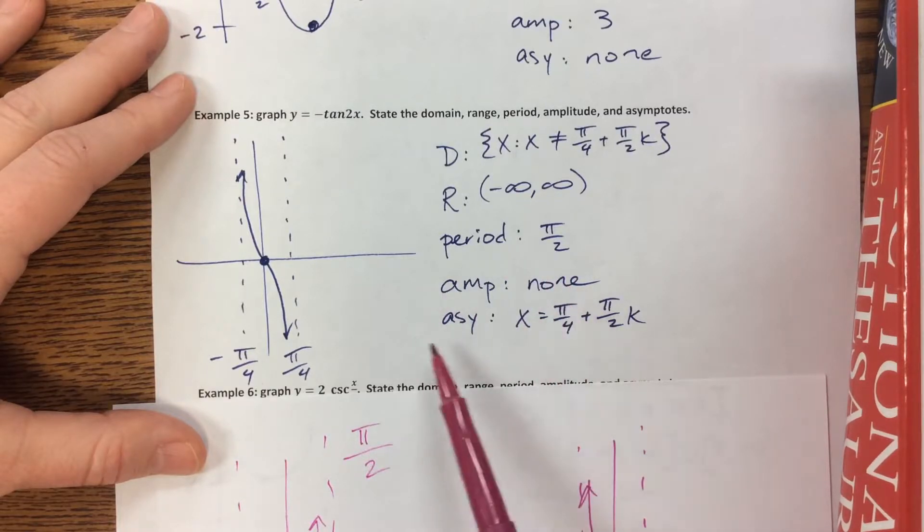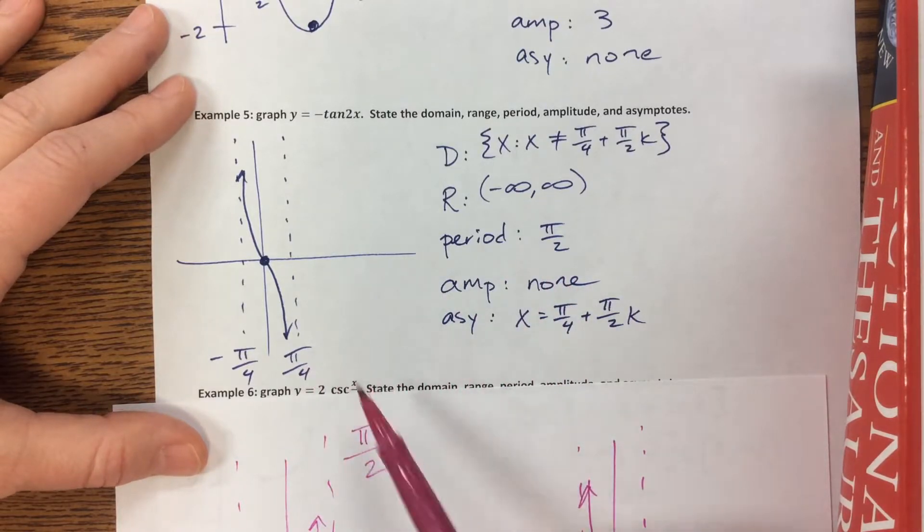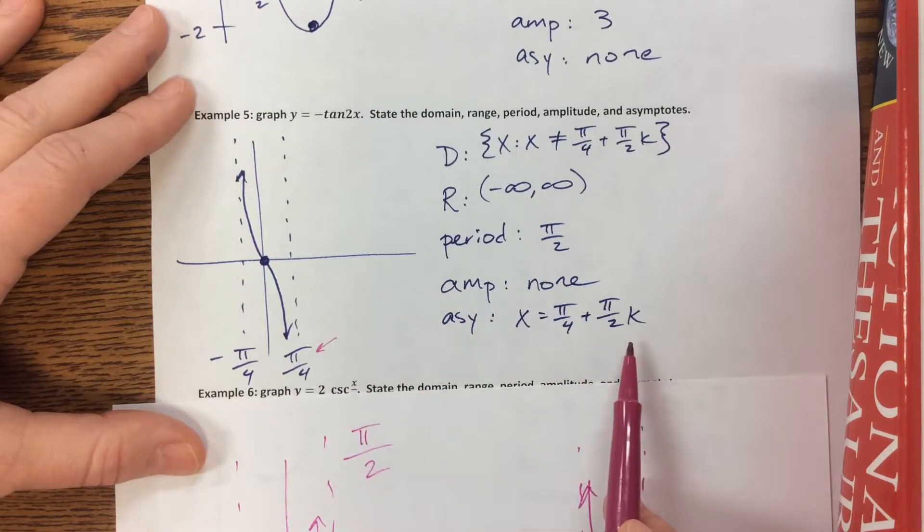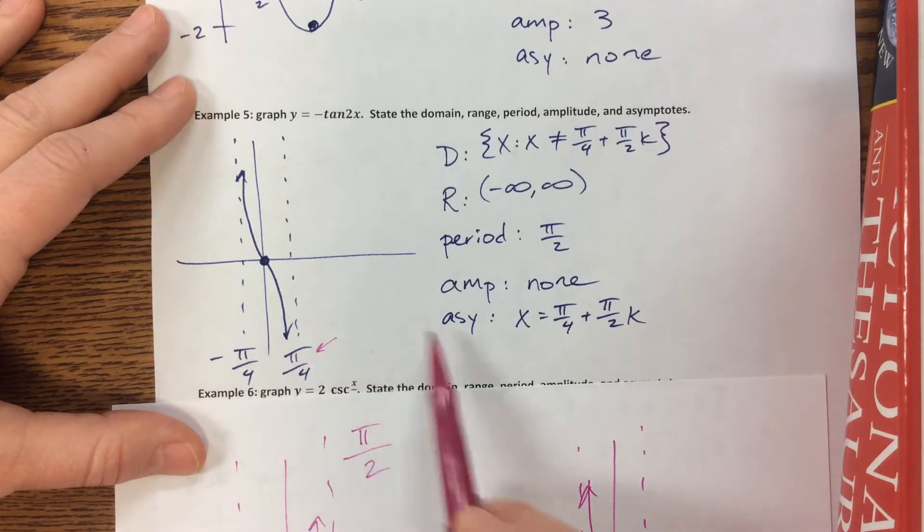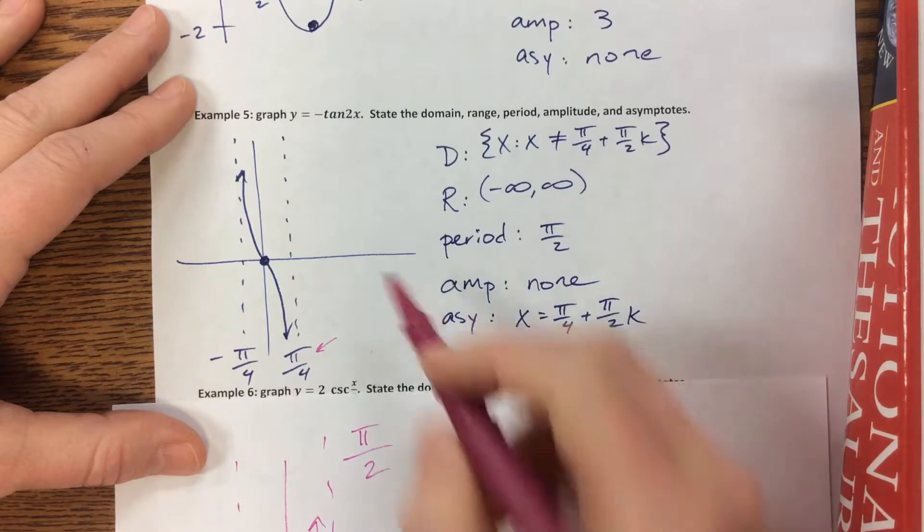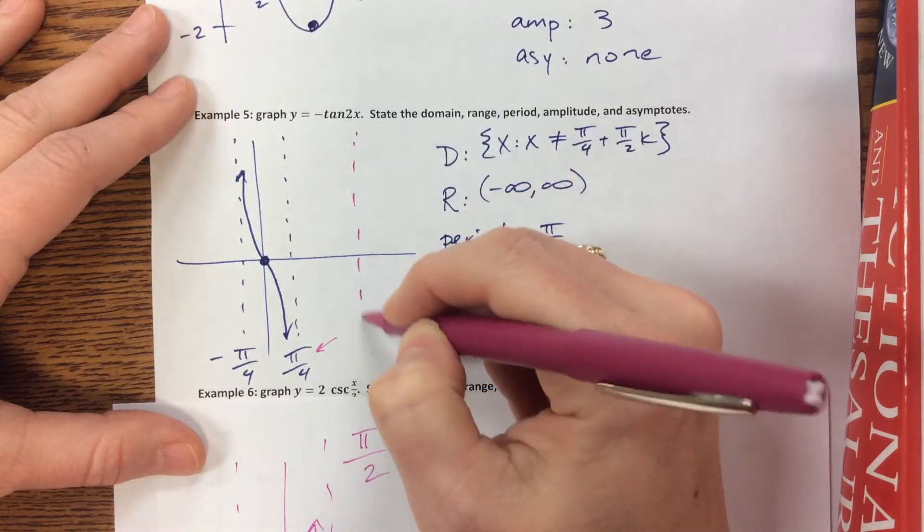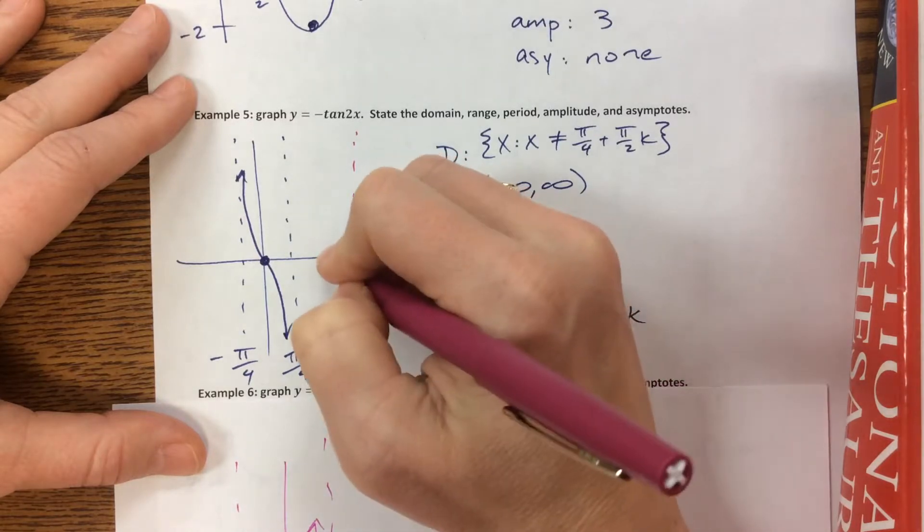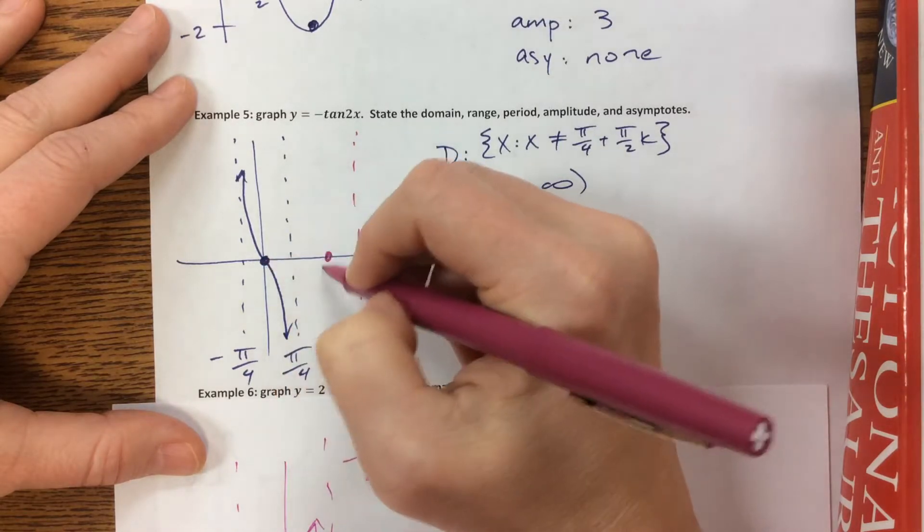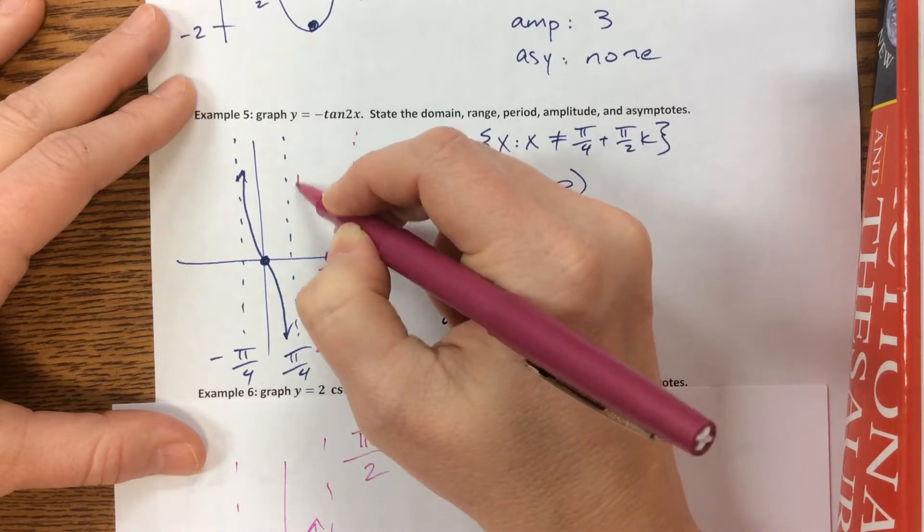The period was π/2. The amplitude, there's none because it's tangent. The asymptotes, well, I like to base it off of the first positive one and then talk about how far apart they are. So you'll notice this first positive one is at π/4 and then they are π/2 apart. So I could draw, if I wanted to, this next one is at 3π/4. And this point right here would be π/2 and it's doing this.